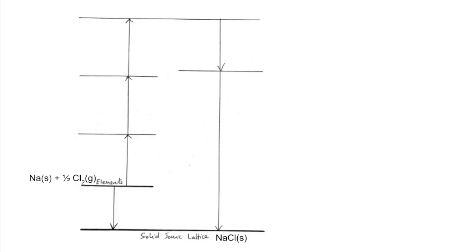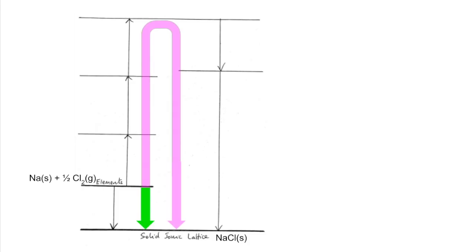We'll look at a simple Born-Haber cycle first — the easiest one is for sodium chloride. The elements and the solid ionic lattice are populated on the diagram. Remember, we've got two routes: the green one and the pink one. Looking at the green route first, that is going from elements to one mole of a compound, so that's the enthalpy change of formation.